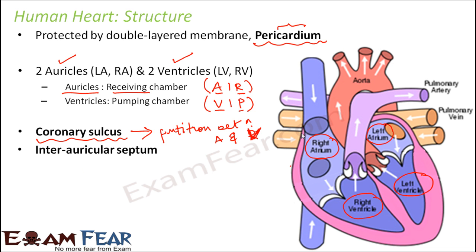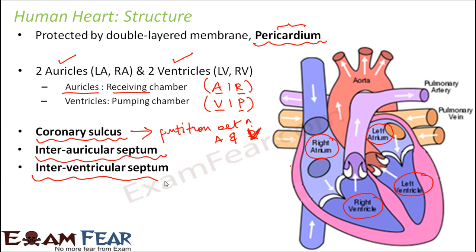The two auricles — right auricle and left auricle — are separated by a partition called the inter-auricular septum. Similarly, there is a partition between the right and left ventricles called the interventricular septum.